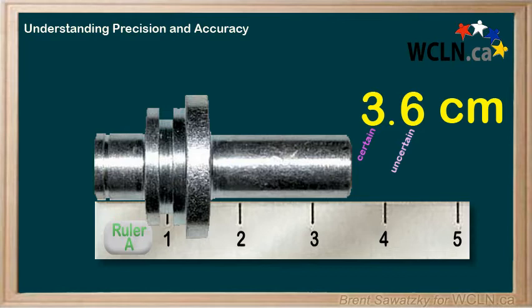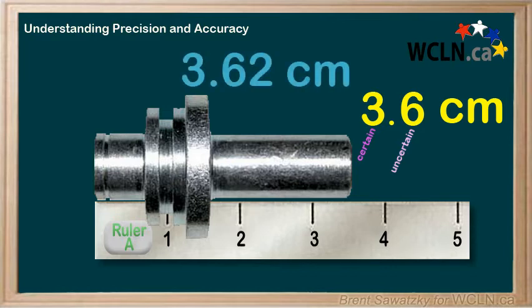Every measurement should have only one uncertain digit. Having more than one uncertain digit really doesn't make sense. If we were to report this measurement as 3.62, we look at the two and say it doesn't add any value. If the six is uncertain, then the two is beyond uncertain — it's a complete guess, and therefore totally useless.